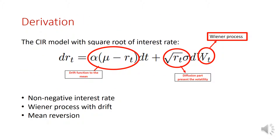In this slide is the derivation of the general form of the CIR model. I want to draw your attention to the three red circles. The first is the drift function, which contains alpha, mu, and R_t — the interest rate at time t. Alpha is the speed of mean reversion to the long-term mean, and mu is the long-term mean. The second part is the diffusion part, which represents the volatility of the process as a function of the square root of R_t.